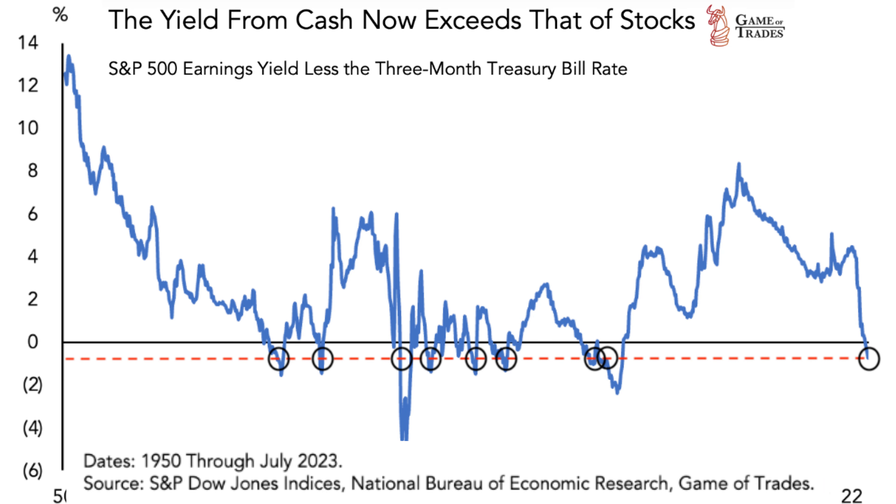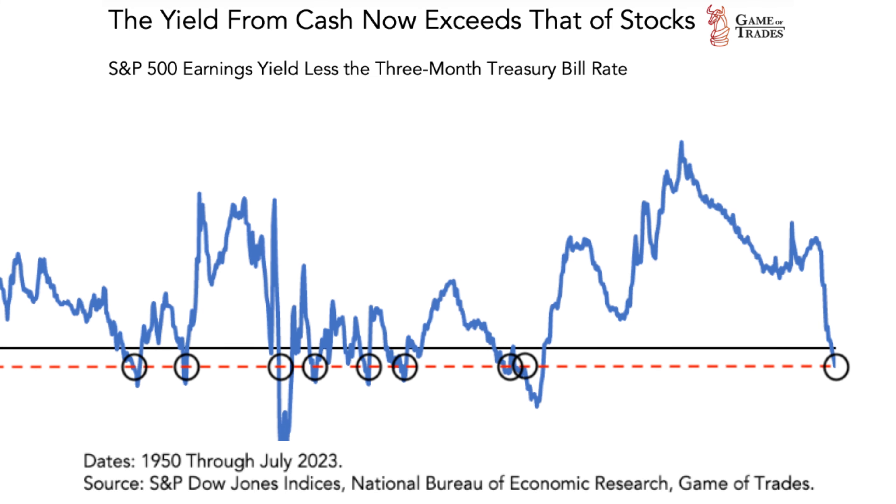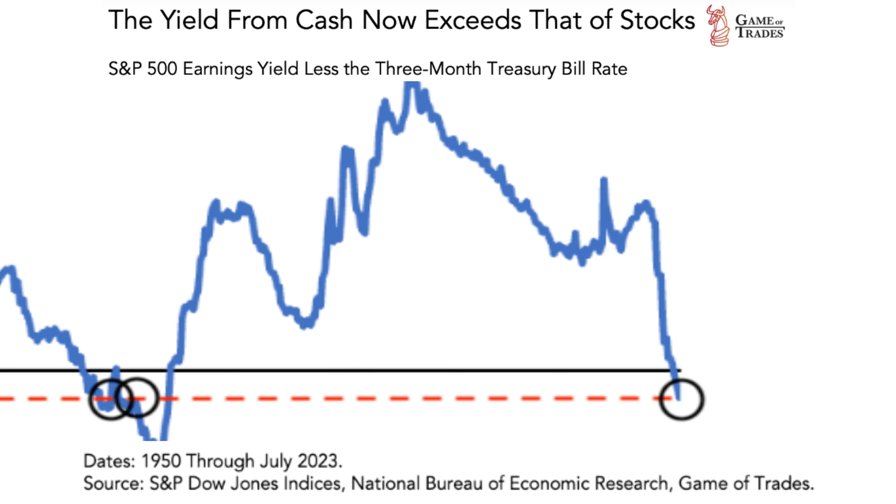Welcome back. For the ninth time in over 50 years, the earnings yield on the S&P 500 has gone below that of the three-month treasury bond. Today, we will look at the historical data on how the market tends to react shortly after such an event happens, why this happens, and what we may expect to happen in the future based on this data.